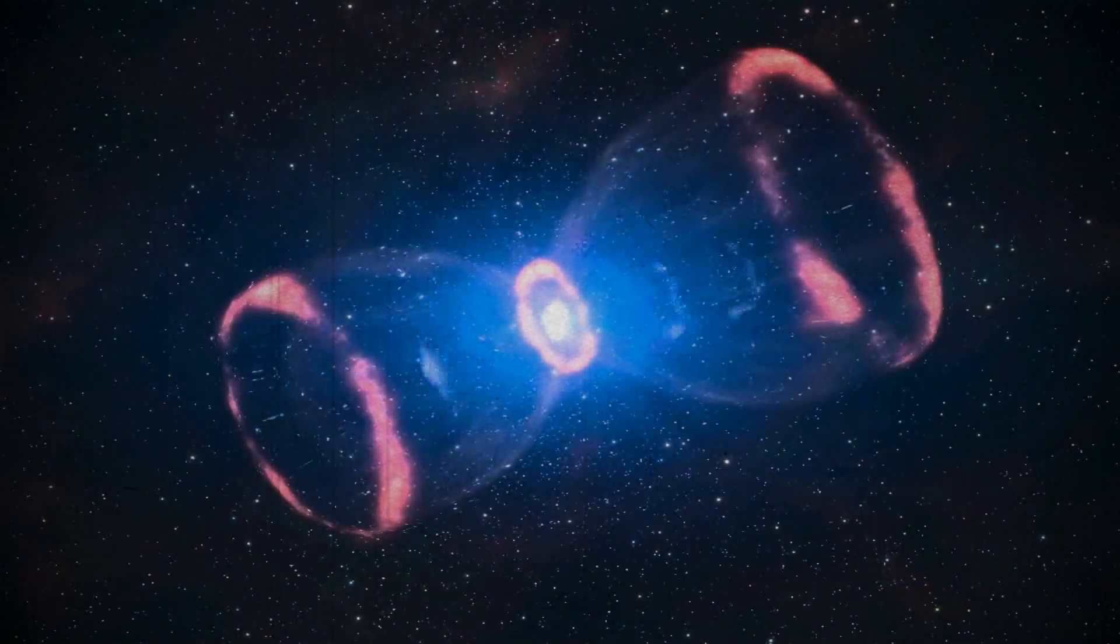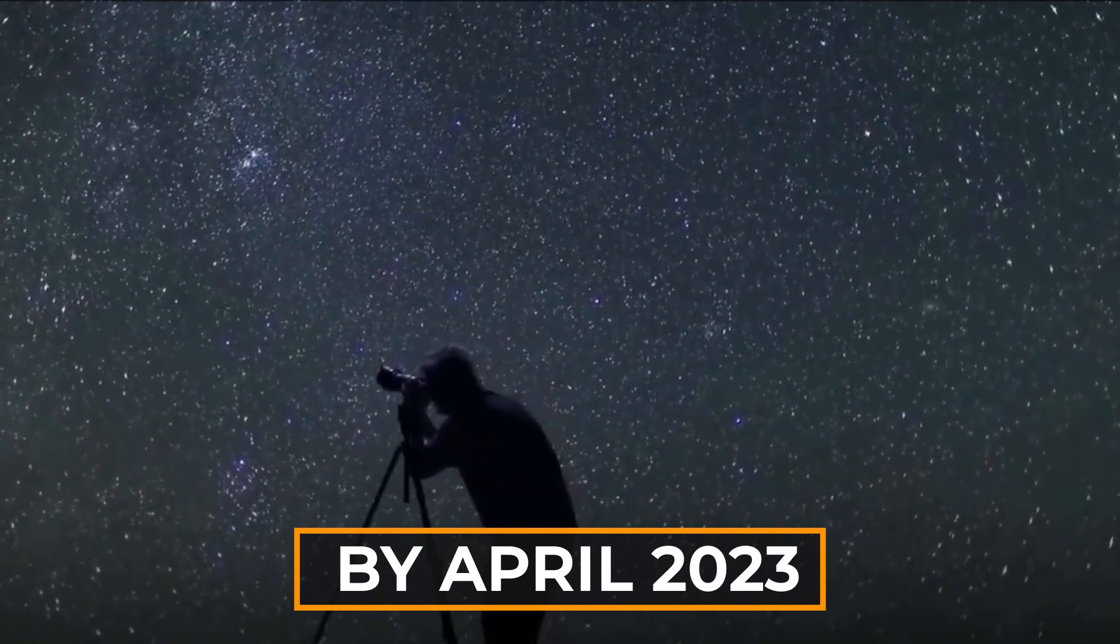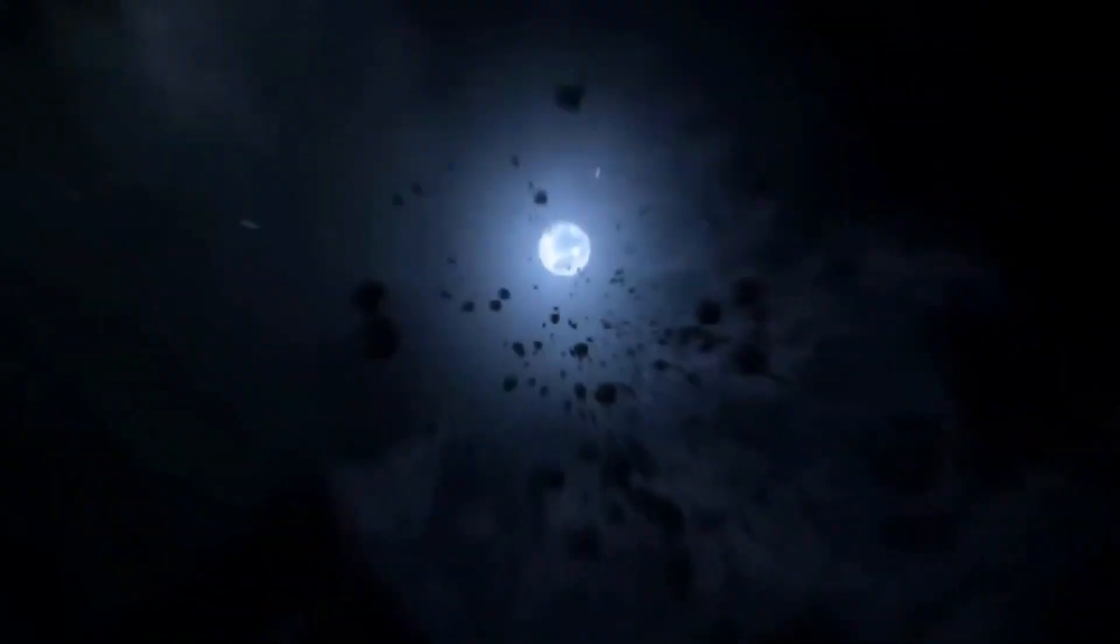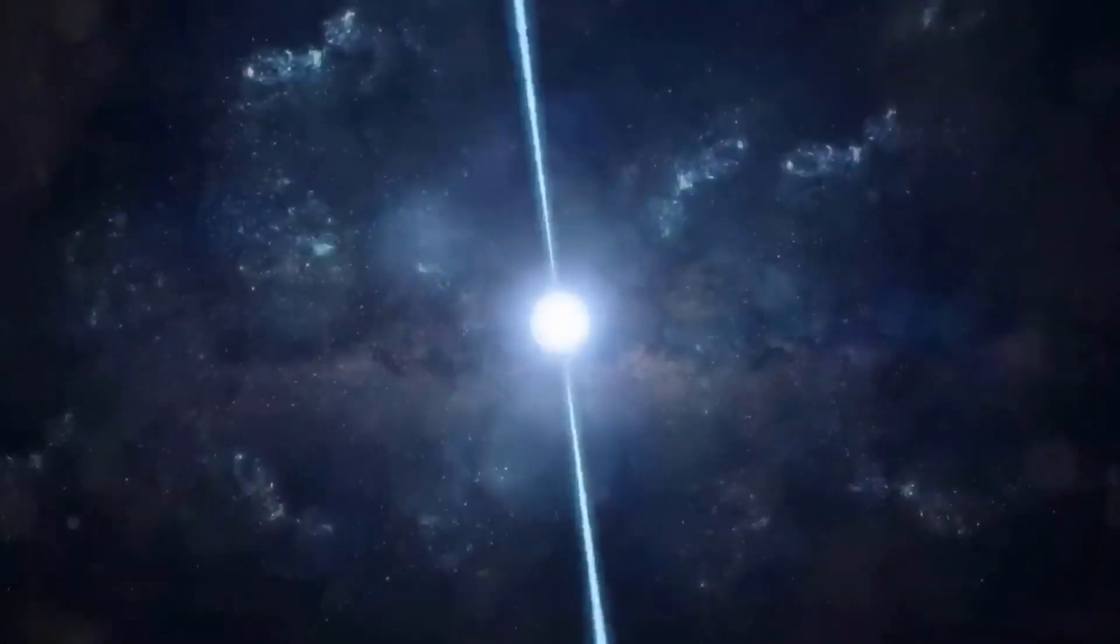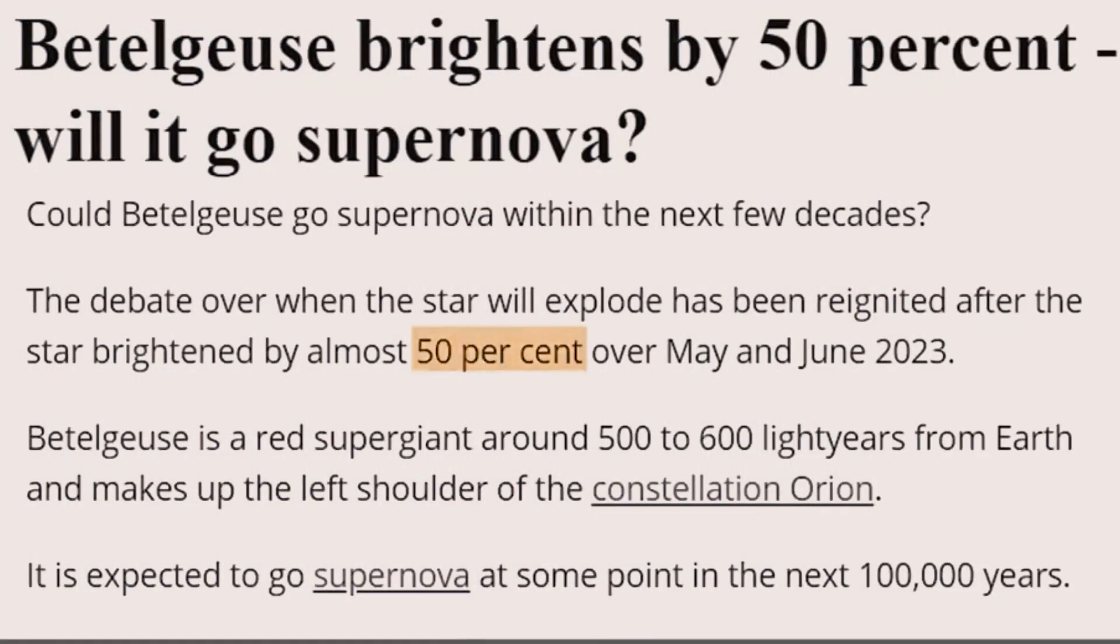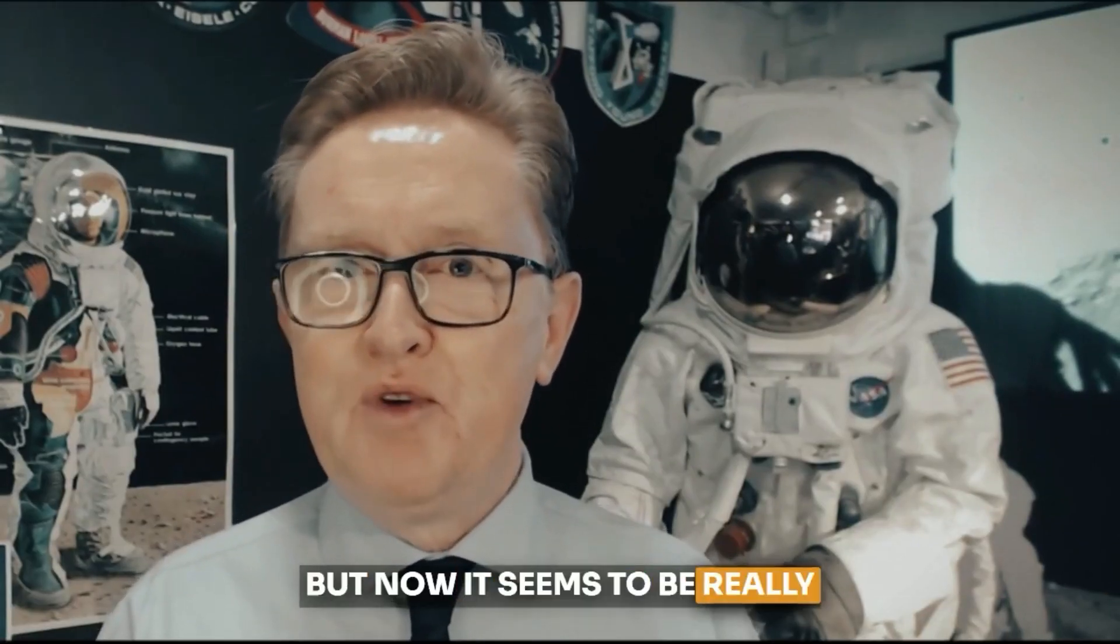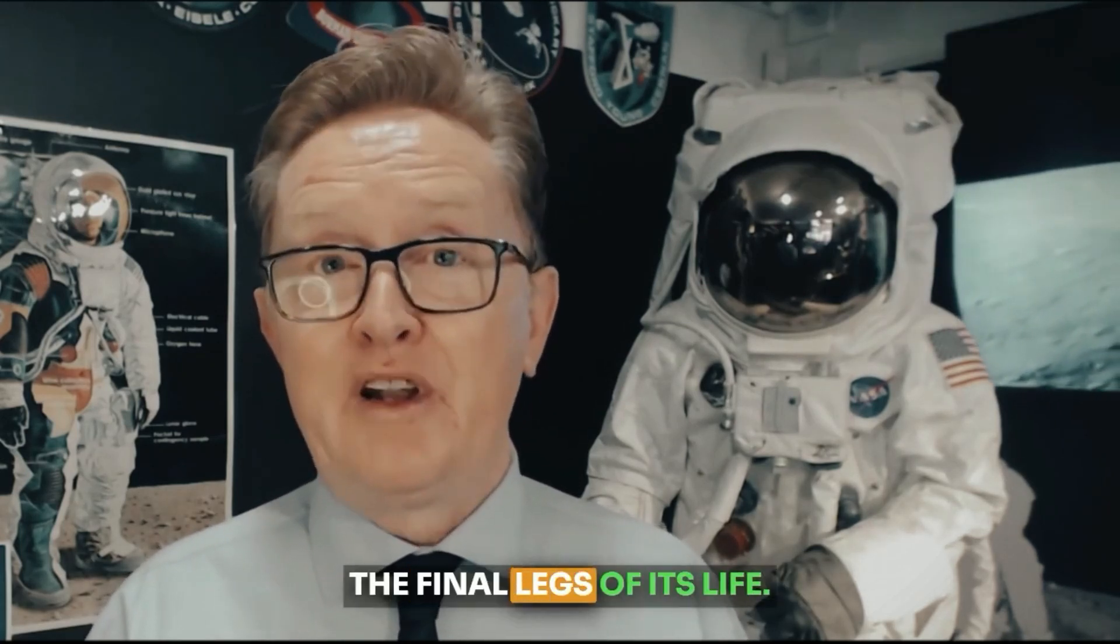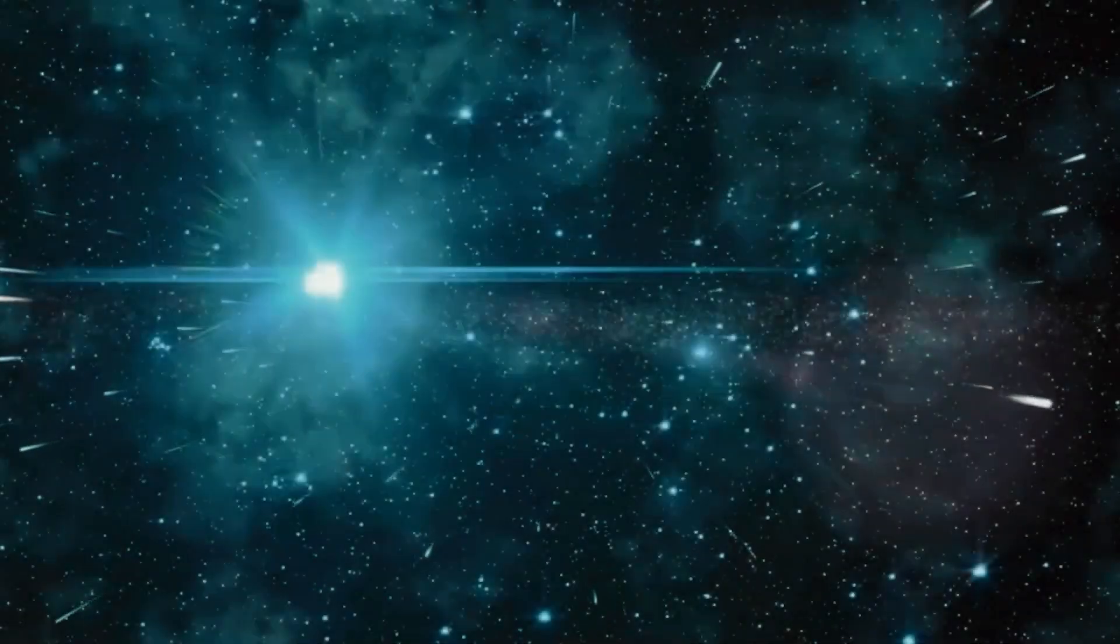This dimming means that we might not have to wait for centuries to see its supernova explosion. It could happen in just a few decades, or even sooner. By April 2023, astronomers reported that Betelgeuse had gone back to its usual brightness levels, which made many think that the strange dimming was over. But then, in a surprising twist, Betelgeuse's brightness suddenly increased by a whopping 50%.